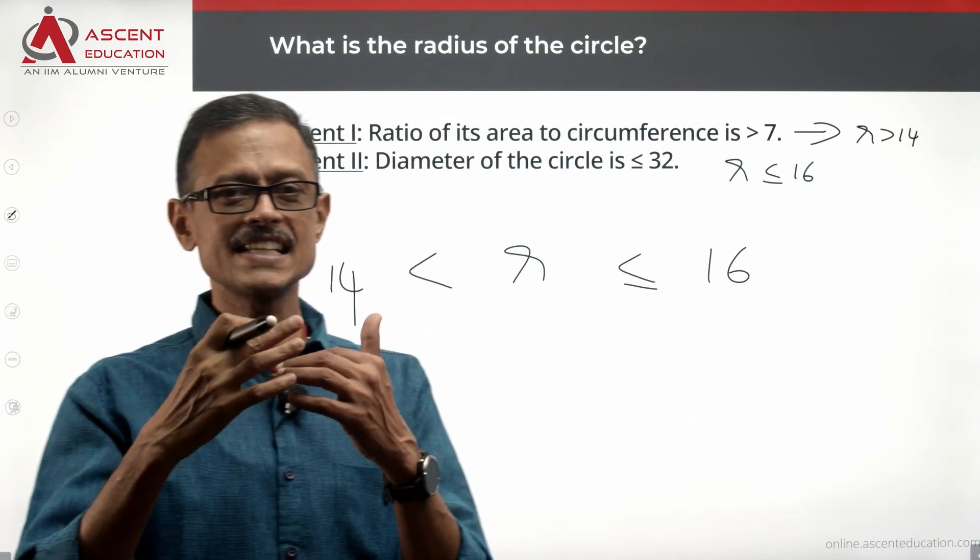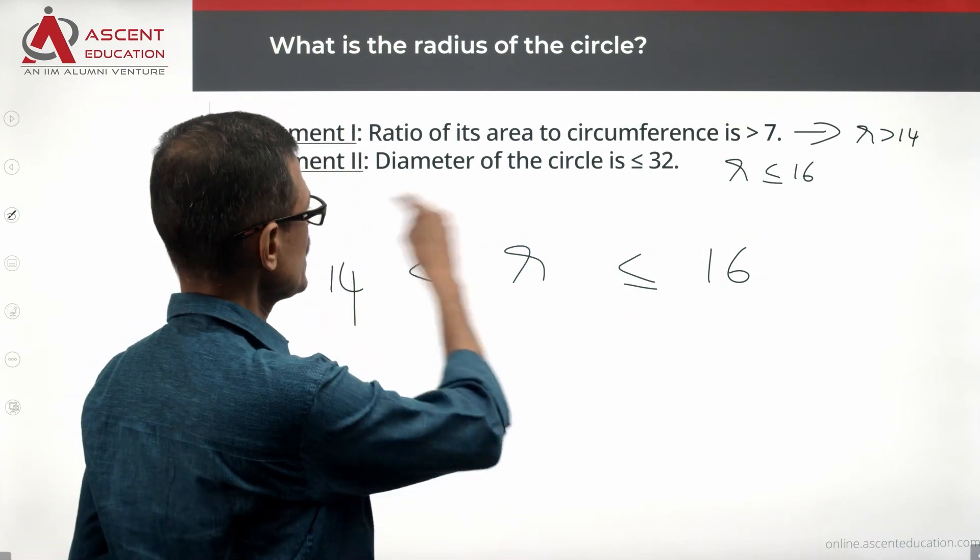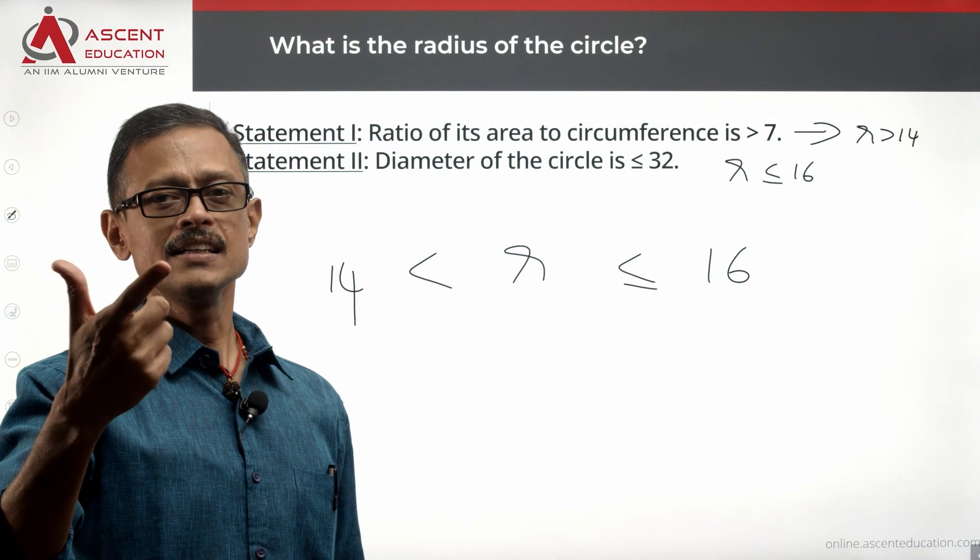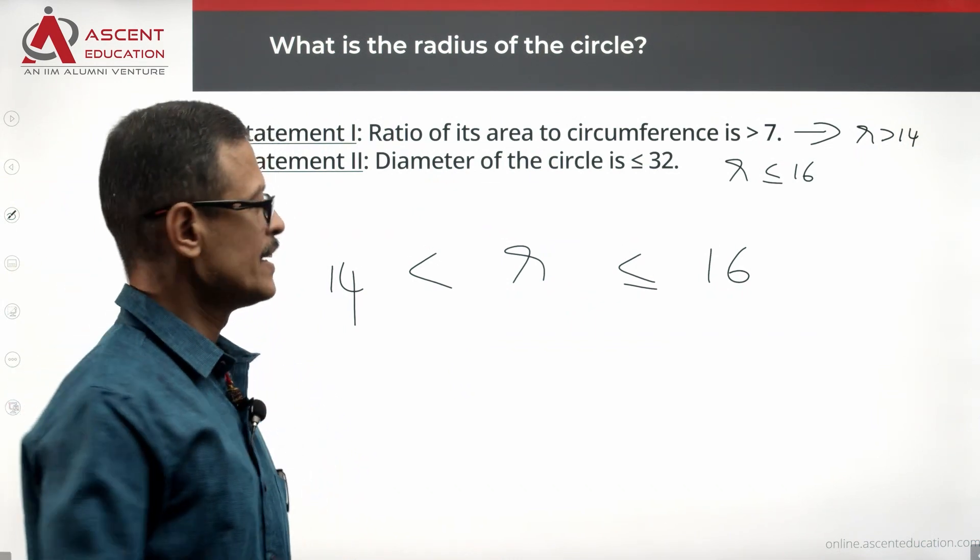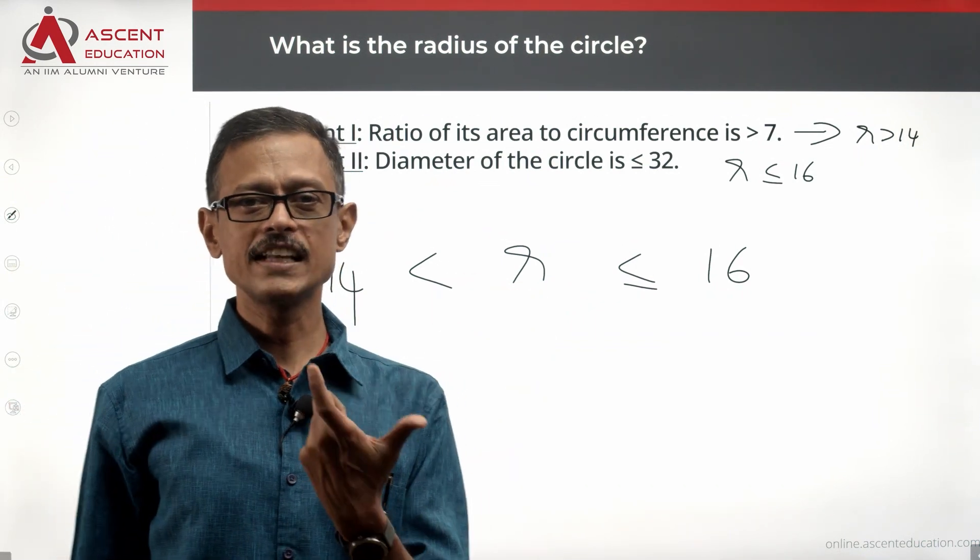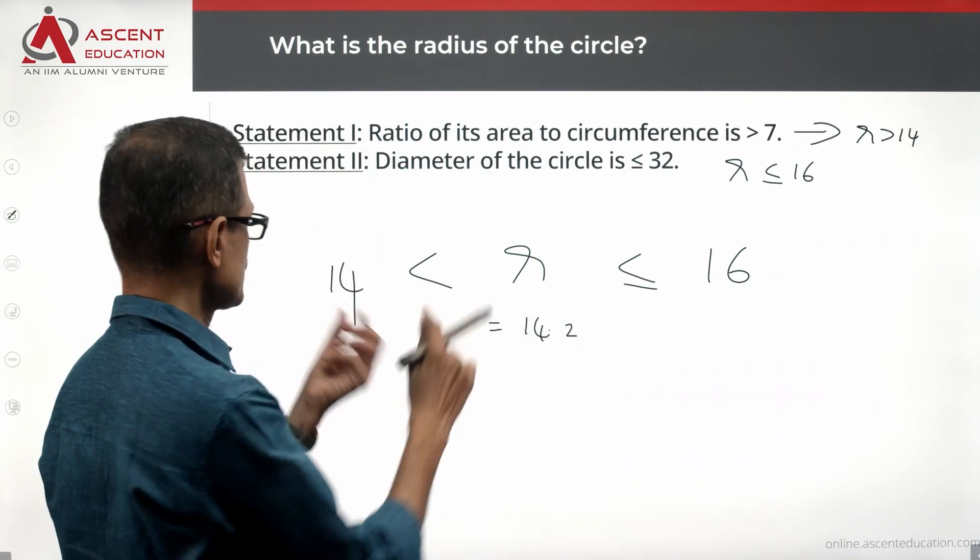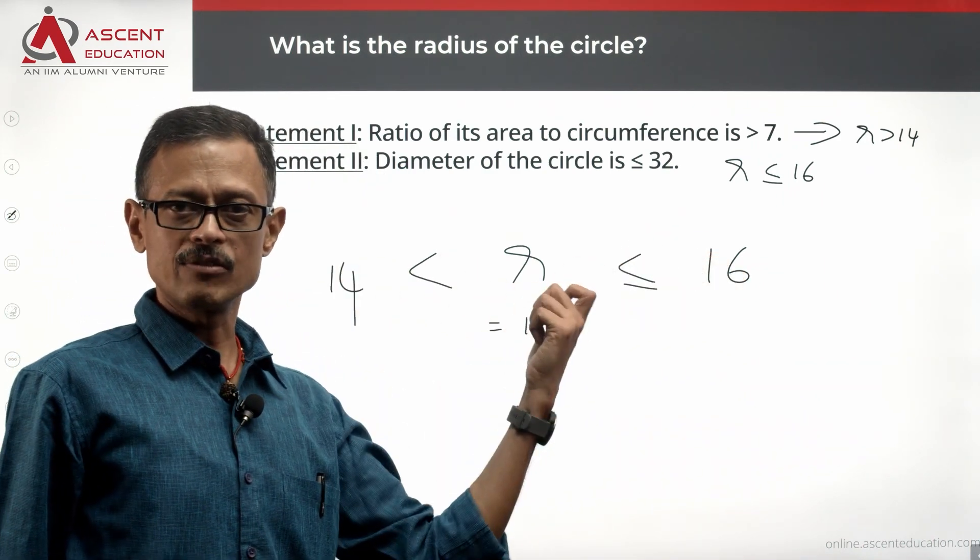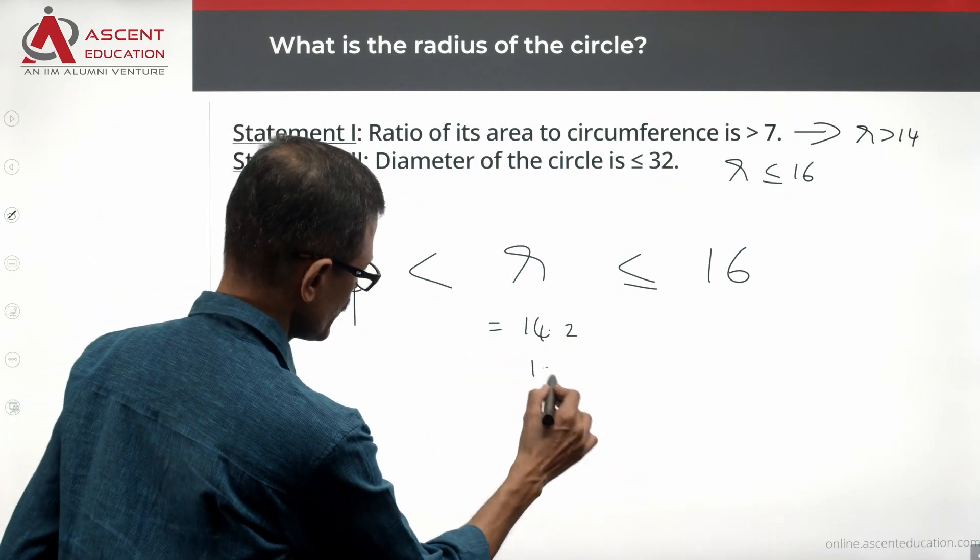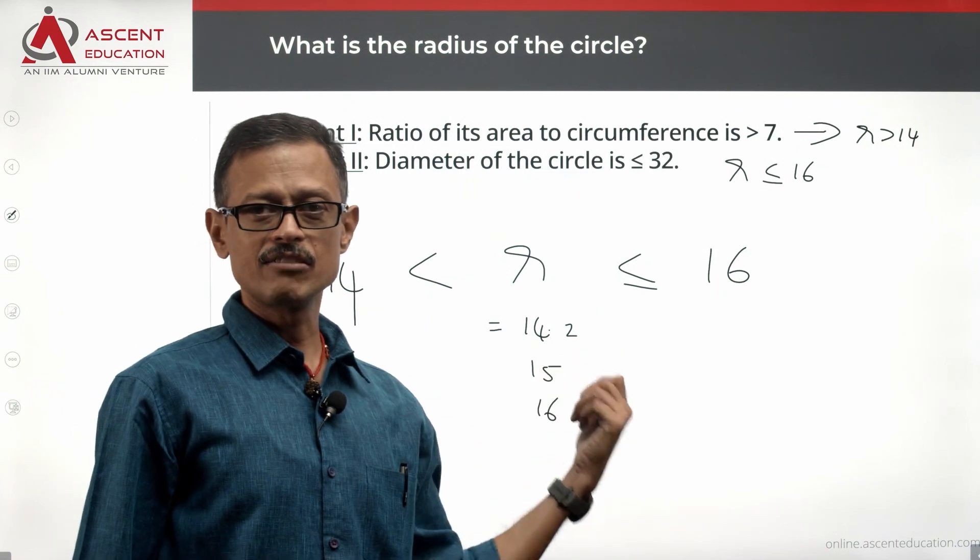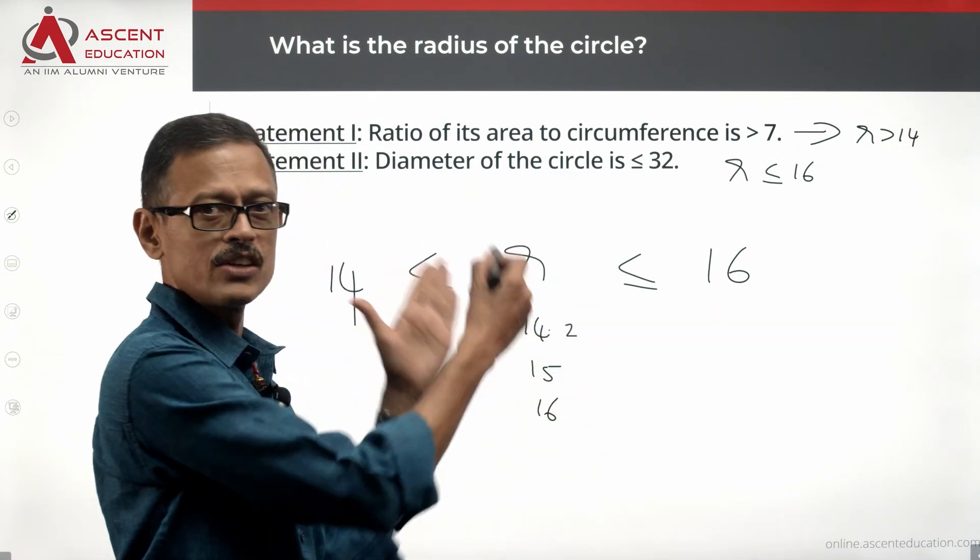The first trap is assuming R is an integer. We will think that R can take only 15 as a value. Can R be equal to 14.2? Is this number greater than 14 and less than or equal to 16? Yes. Can it be 15? Possible. Can it be 16? Yes. It's greater than 14, less than or equal to 16. There are infinite values it can take.